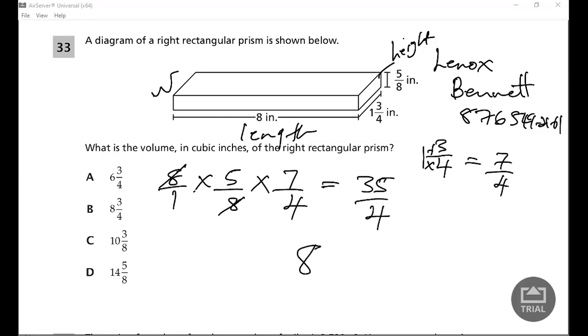32 from 35 would leave 3 over 4. So our answer would be B, 8 and 3/4 cubic inches.